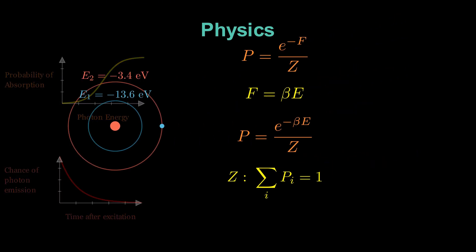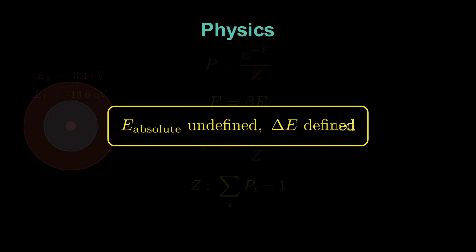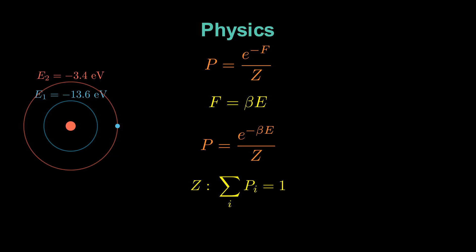But there's one more trick physicists use. Energy itself isn't absolute, only differences in energy matter. So, we can shift our baseline to make calculations cleaner. Let's define the lower orbit to have energy zero.